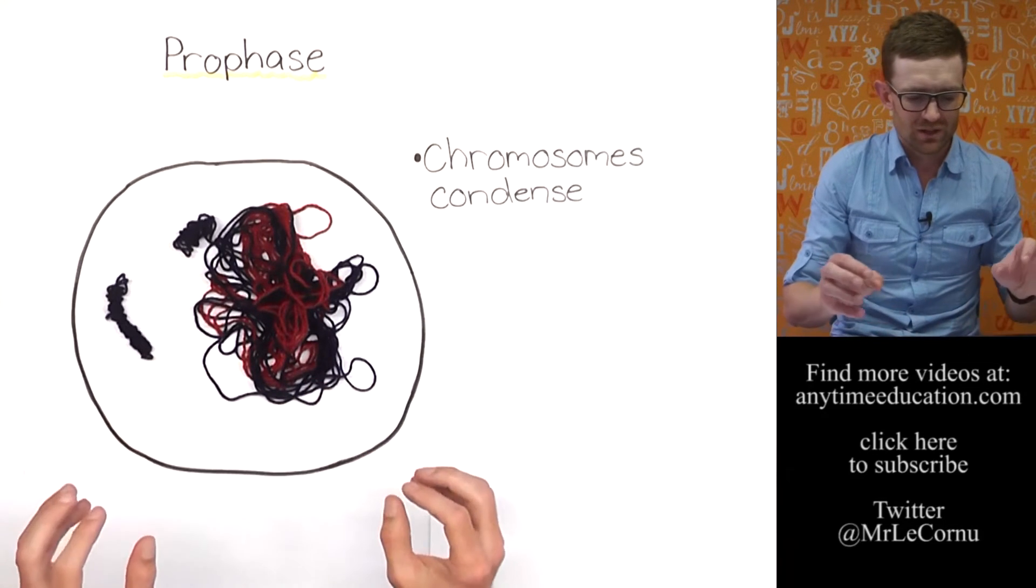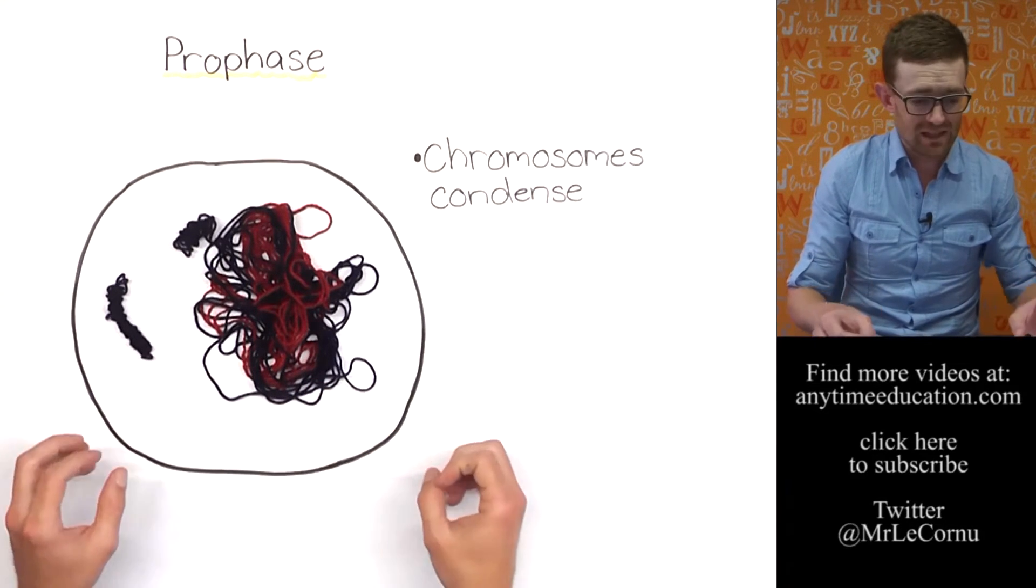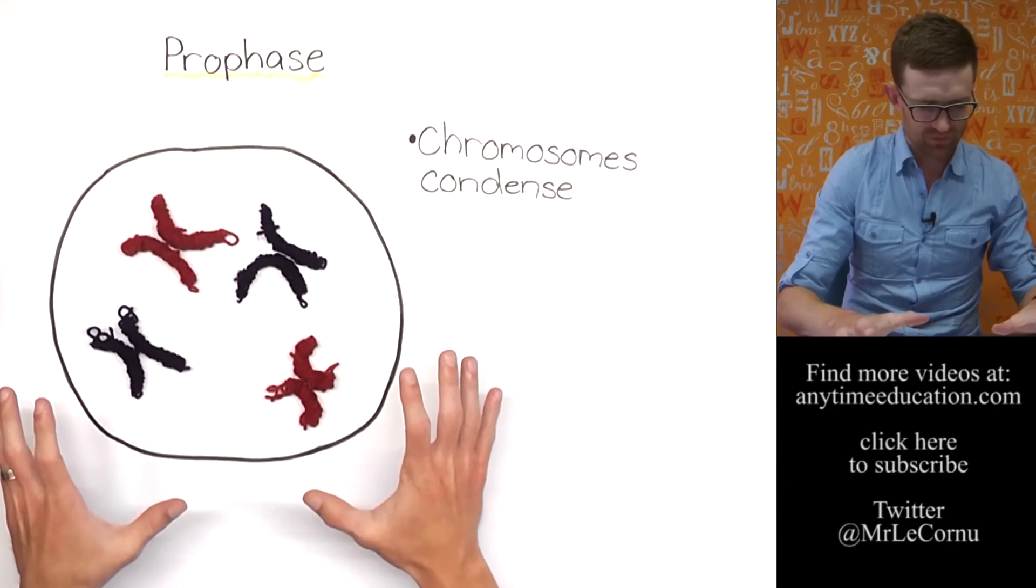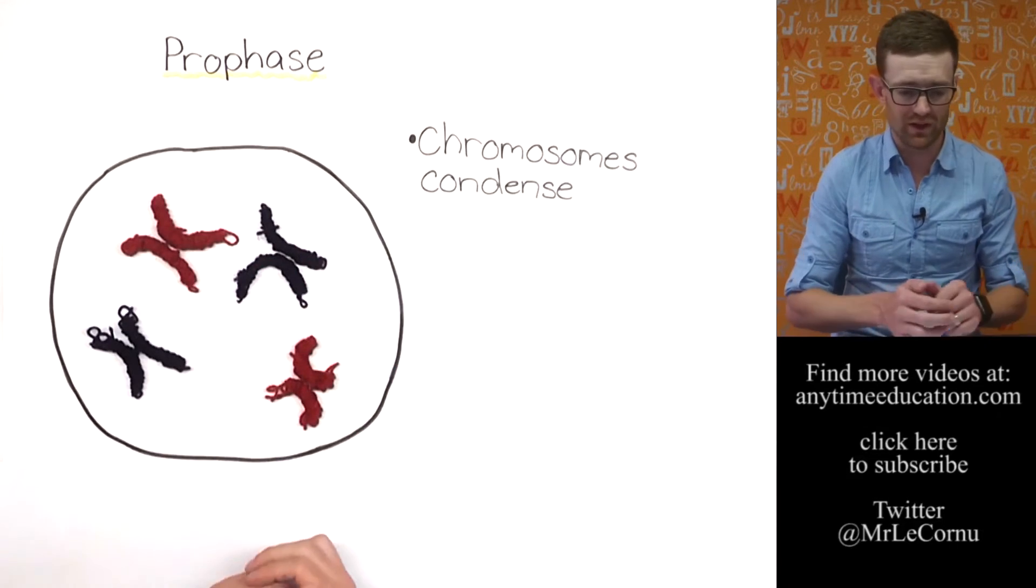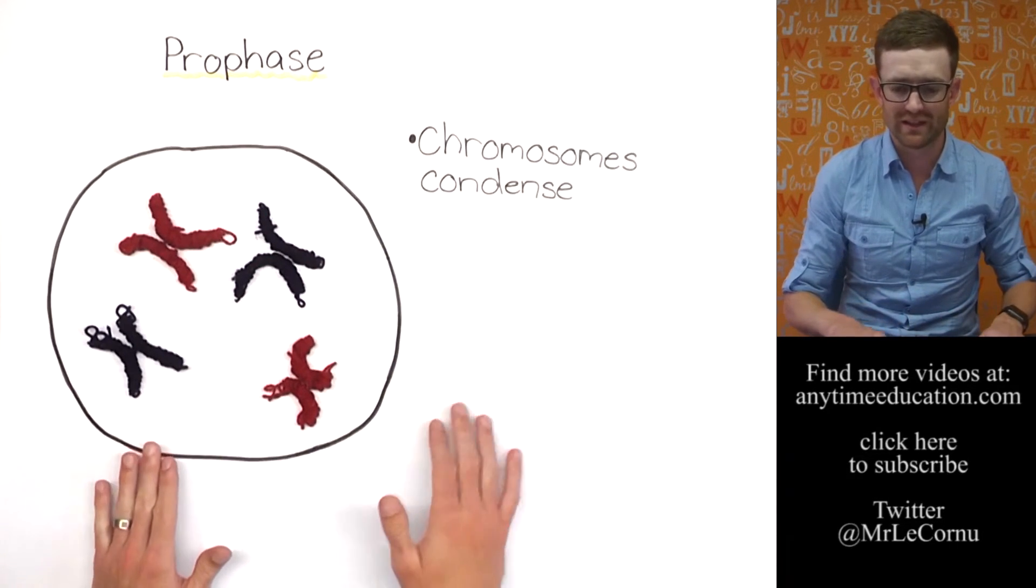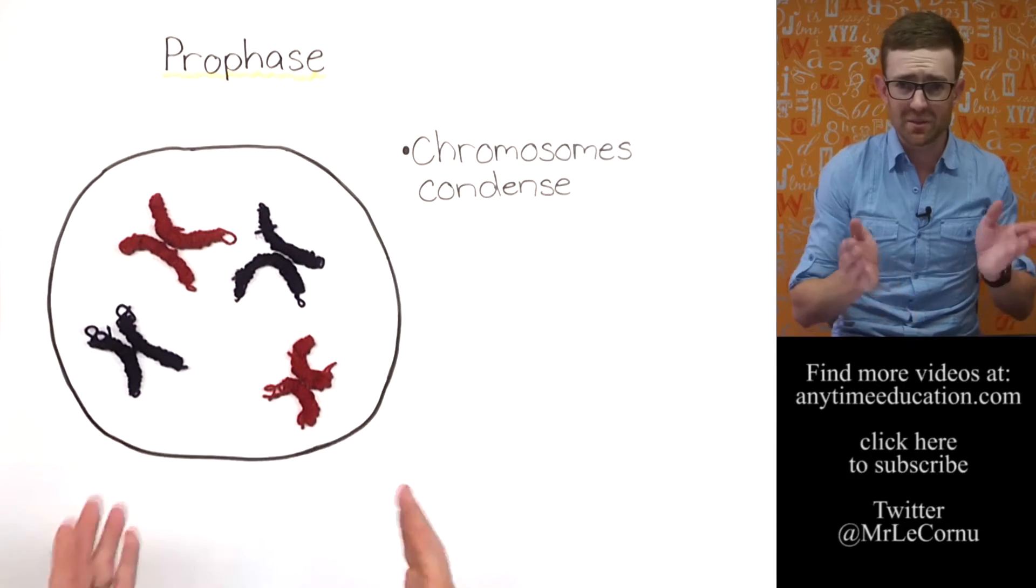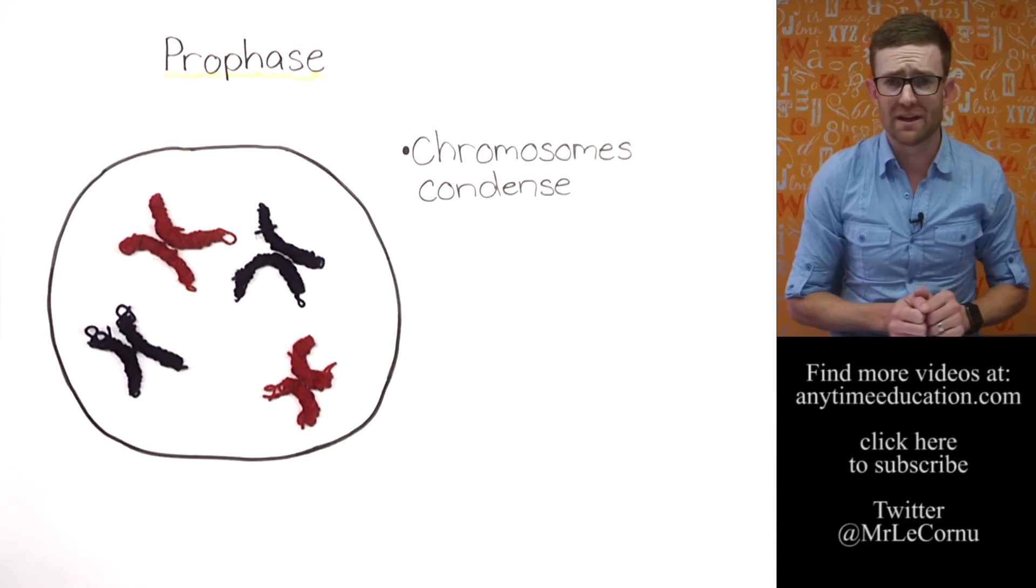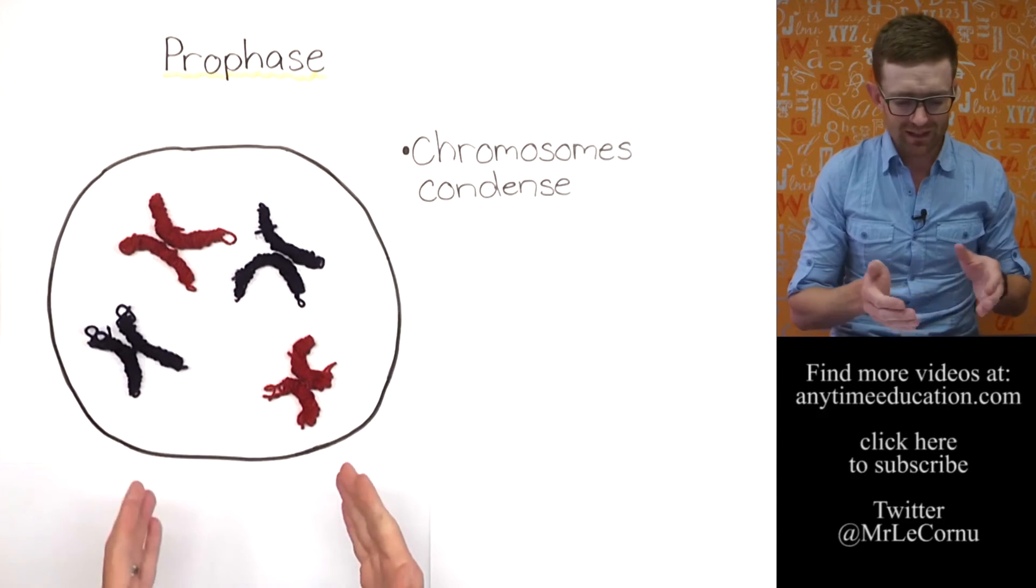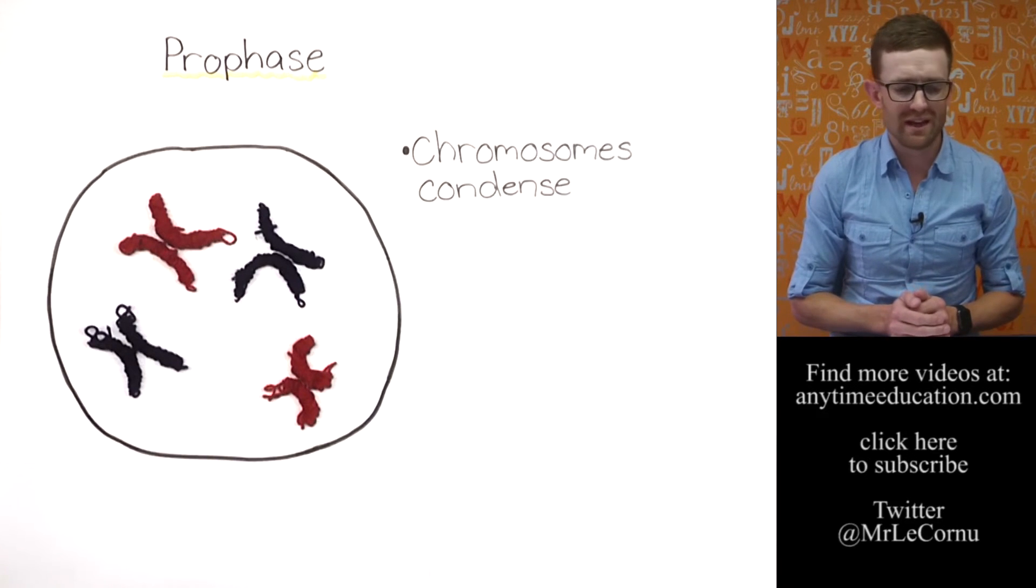So that's one of the first things that happens. So let's just magically condense these chromosomes. There we go, very nice. So the chromosomes have condensed. As you can see now, it's going to be a lot easier to separate those and to divide them up evenly because it's a lot more obvious where they are.